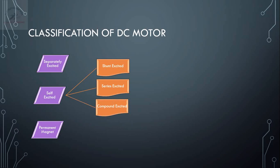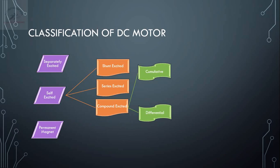In a compound motor we have two types: cumulative and differential. In a compound motor both series and shunt windings are present. If the flux established by the series field and the shunt field are additive in nature — adding together to create more flux — we call it a cumulative machine. If the flux created by the series field winding opposes the flux created by the shunt field winding, we call it a differential motor.